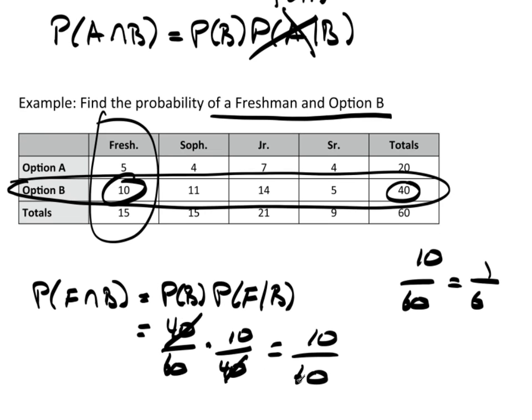Now, why did I go through all this when I could have just easily read it off the table? Because, you don't always have a table to work with. You need to understand how these probabilities work. You may have another way of finding this probability and another way of finding this probability. And, you don't have a table available to you.